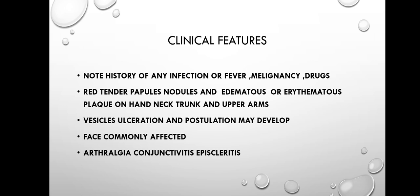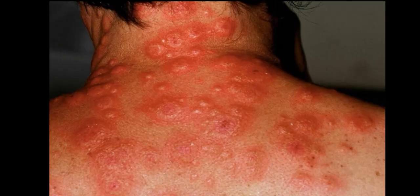Clinical features: note history of any infection or fever, malignancy, or drugs. Other features include red tender papules, nodules, and edematous or erythematous plaques on the head, neck, trunk, and upper arms. Vesicles, ulceration, and pustulation may develop. The face is commonly affected. Other features are erythralgia, conjunctivitis, and episcleritis. This picture describes all clinical features of Sweet Syndrome — lots of red erythematous plaques associated with vesicles, ulceration, and pustules.